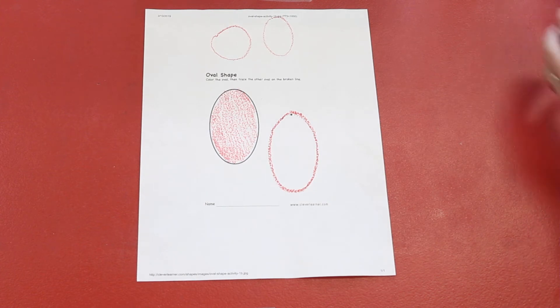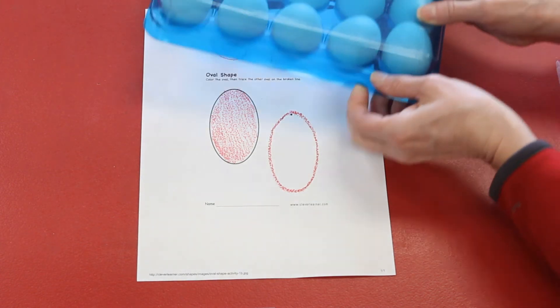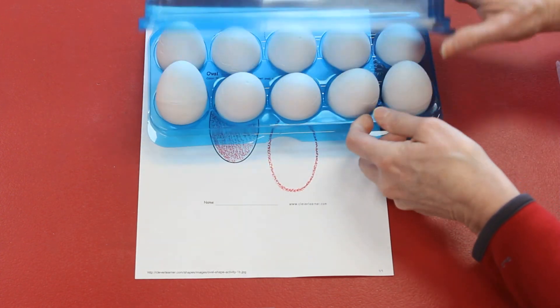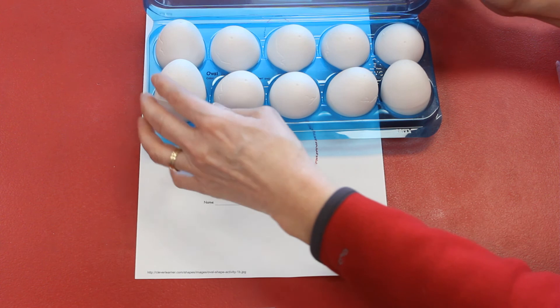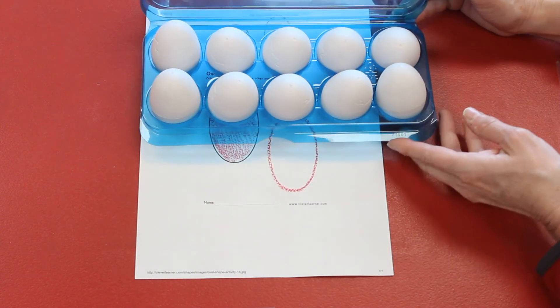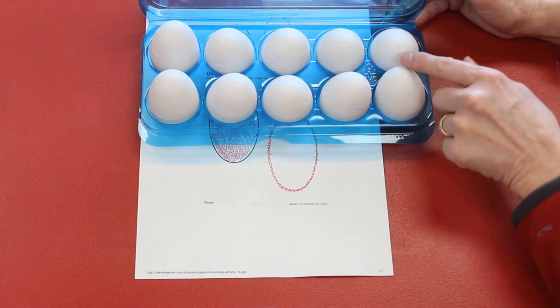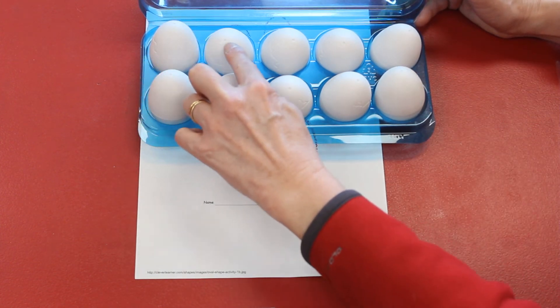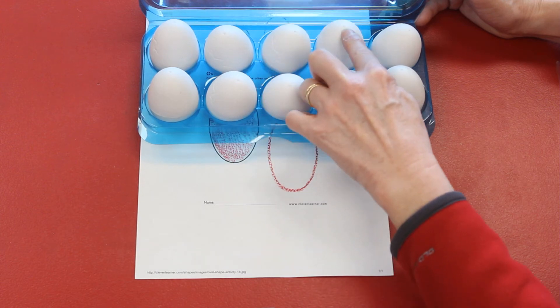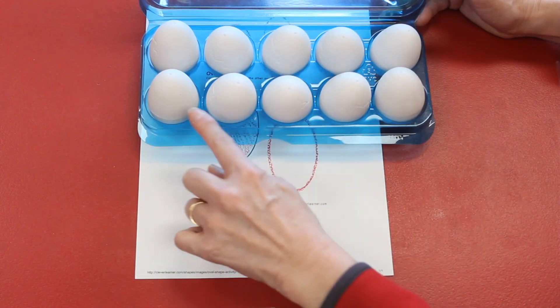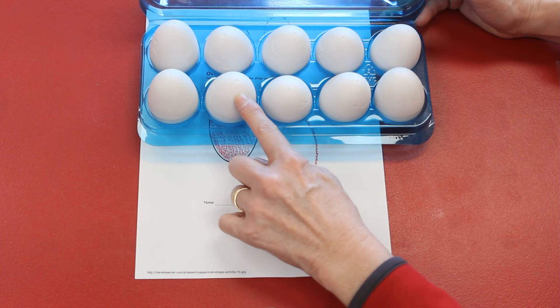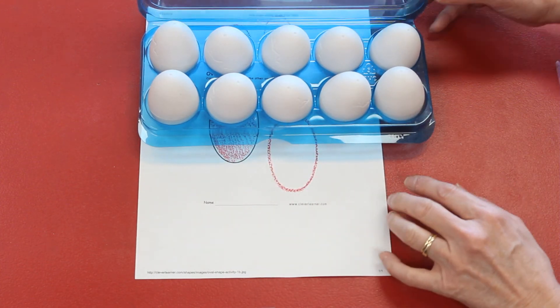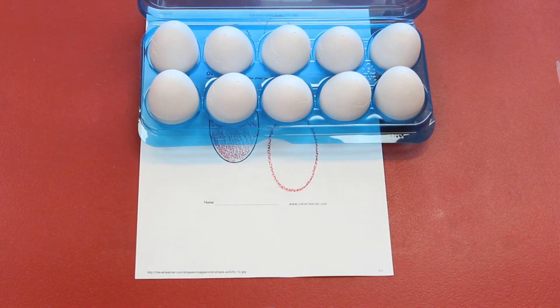All right. I have some oval shapes here. You've seen these in the house center, haven't you? Is there something in your refrigerator that might be shaped like an oval? I have some eggs. Let's count how many. One, two, three, four, five, six, seven, eight, nine, ten. I have ten eggs in my container.